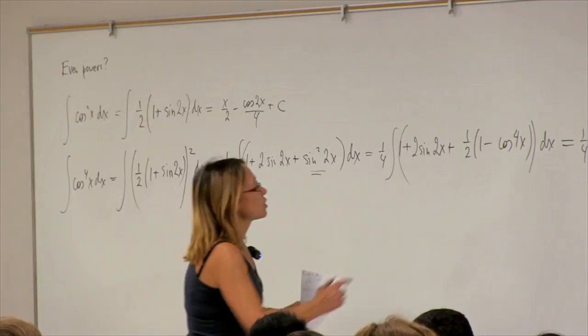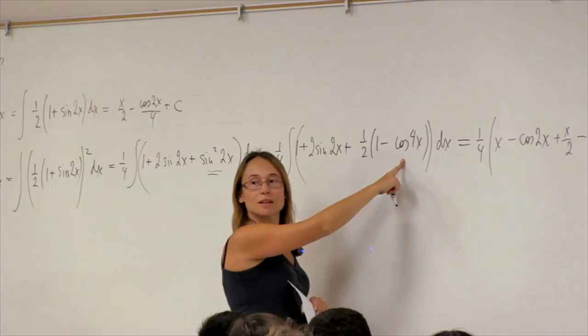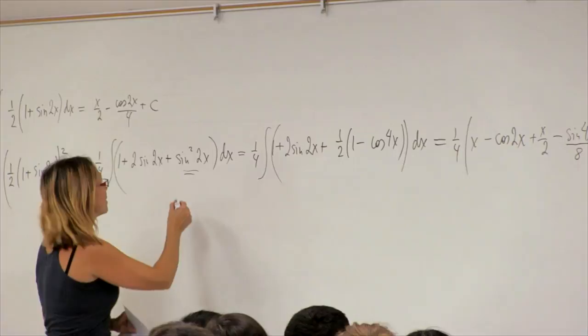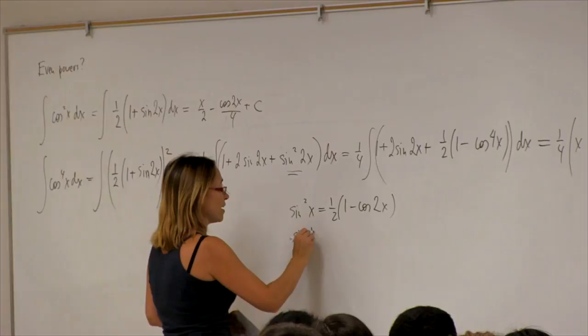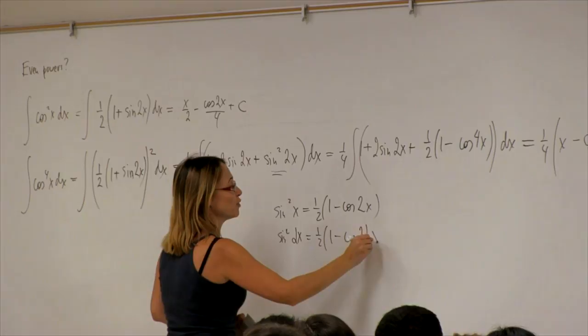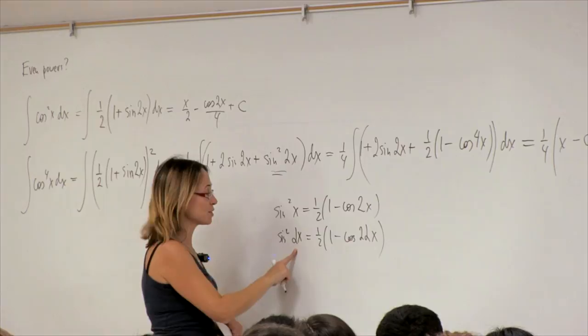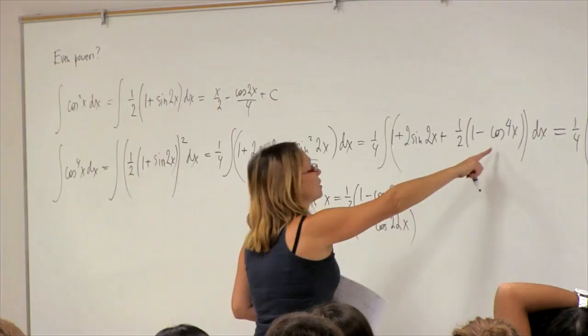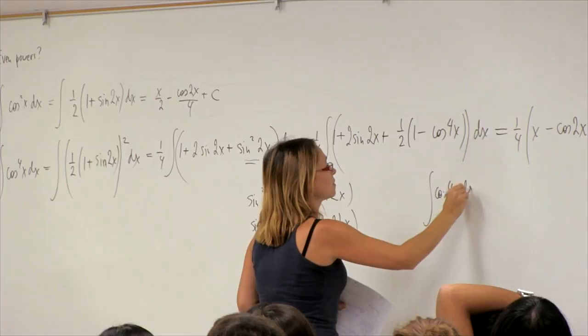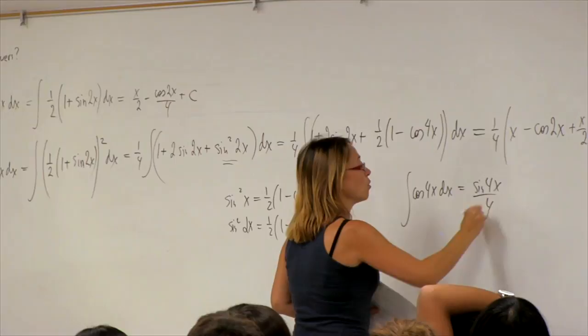Student question: why is it sine 4x? The antiderivative of cosine 4x is sine 4x over 4. The factor of 8 comes from the one-quarter outside. Explaining further: sine squared of alpha x equals one-half times 1 minus cosine 2 alpha x, so if alpha is 2x, the argument becomes 4x. The number 8 comes from combining that factor with the one-quarter.